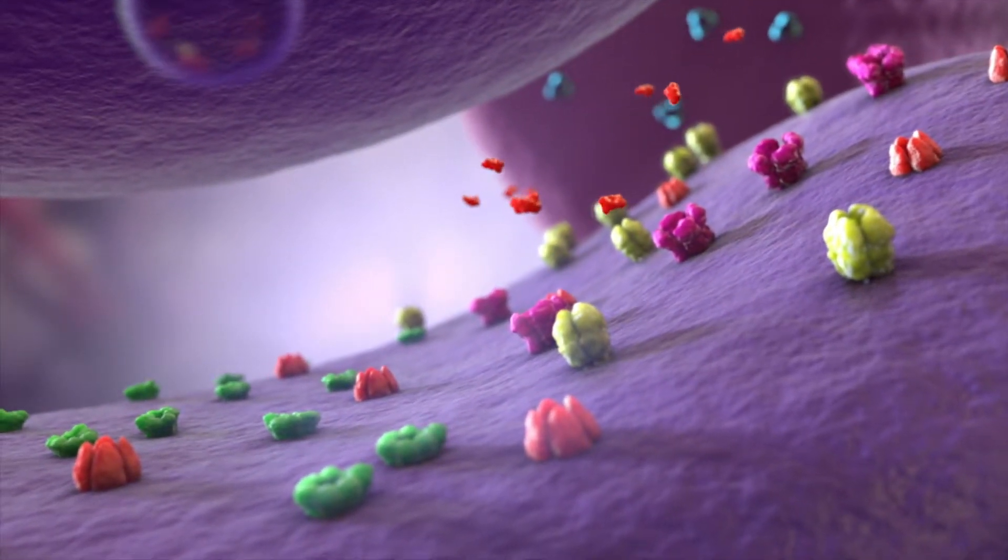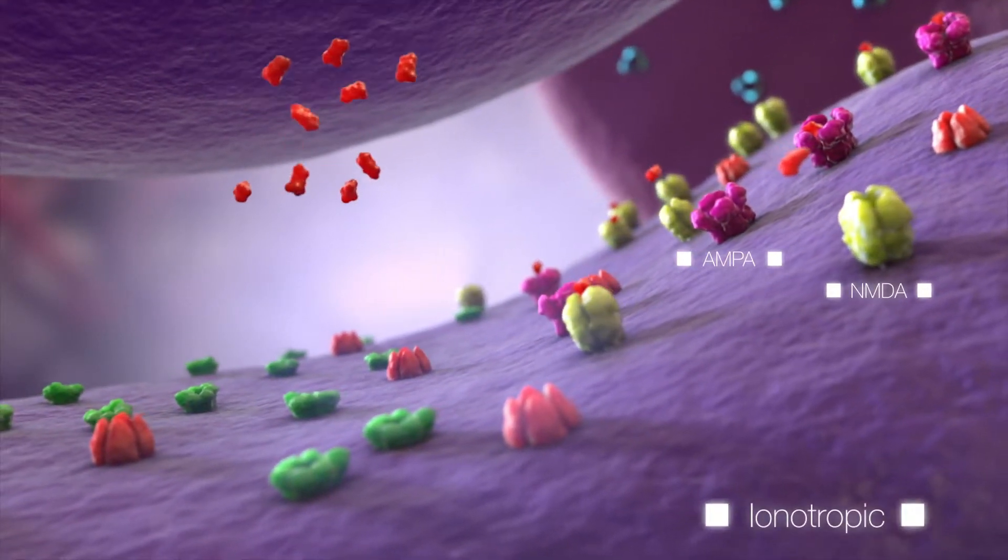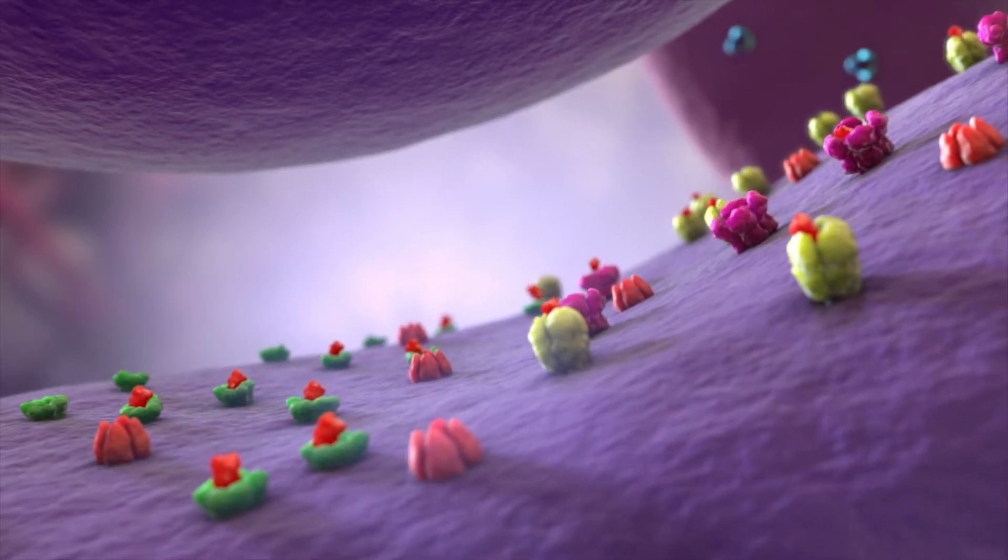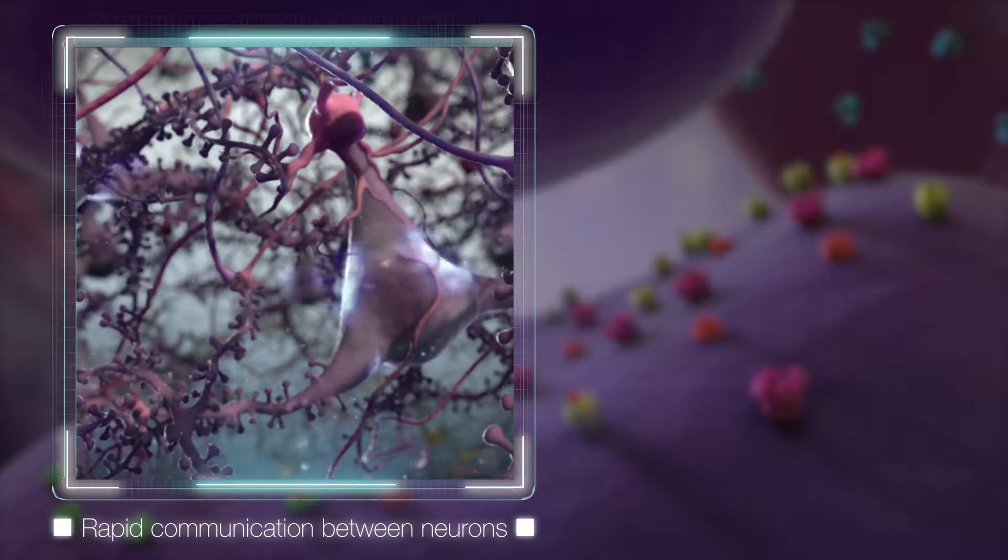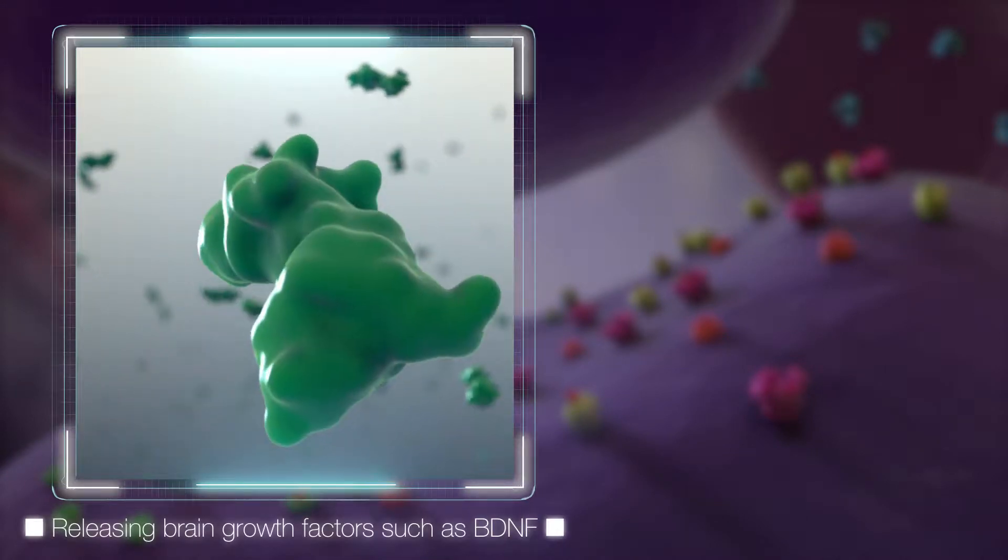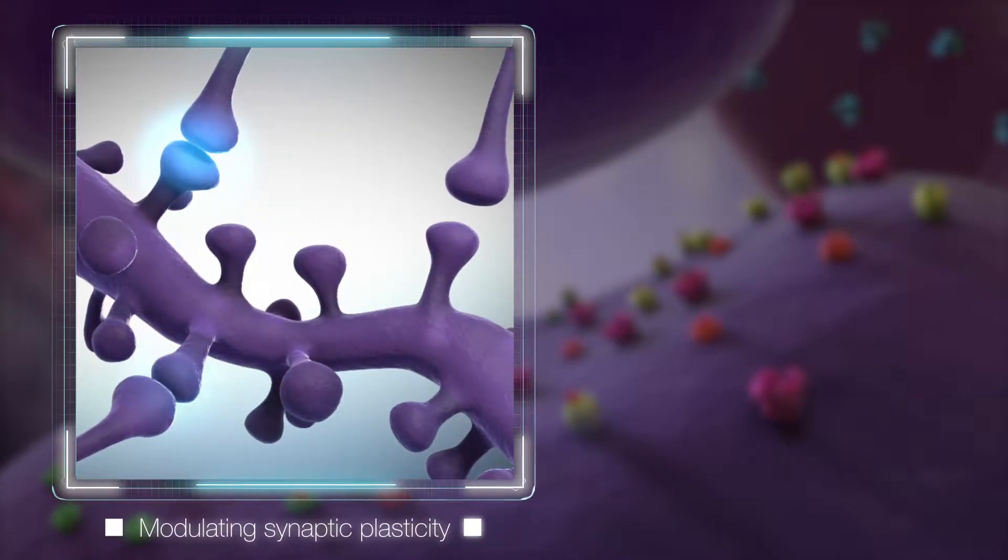Once released, glutamate can bind with several types of receptors, including postsynaptic ionotropic and metabotropic receptors that are responsible for a range of downstream effects, including initiating rapid communication between neurons, releasing brain growth factors such as BDNF, and modulating synaptic plasticity.